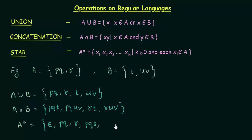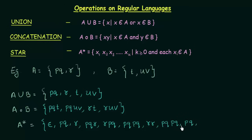We can put R first and then PQ, or we can join PQ with itself to get PQPQ, or join R with itself to get RR. We can also join PQ three times as PQPQPQ, or R three times as RRR, and it goes on. This is actually an infinite set — it can have an infinite number of elements. That is how we perform Union, Concatenation, and Star.